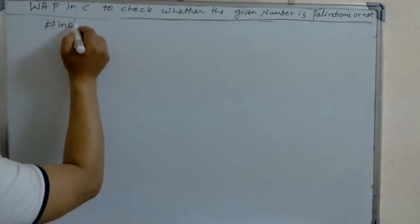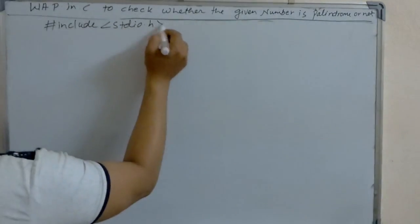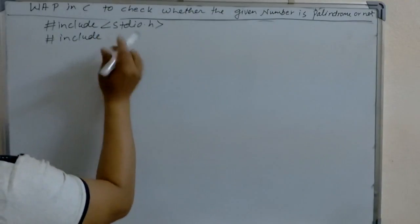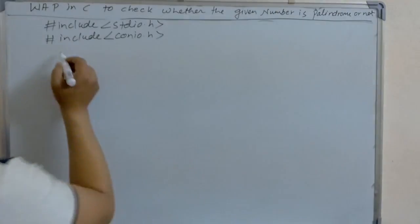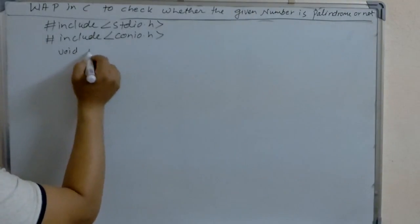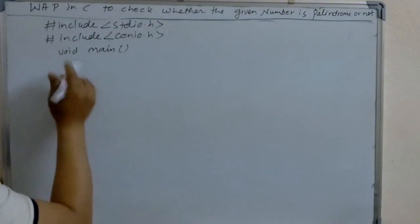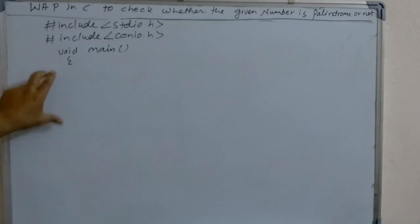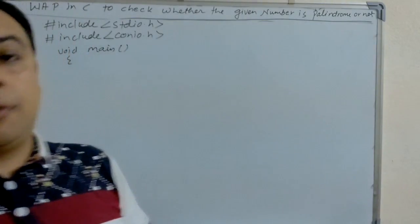We include stdio.h and conio.h. Then we start the main program with void main. The main function is divided into two parts: one is the declaration part and the other is the executable part.